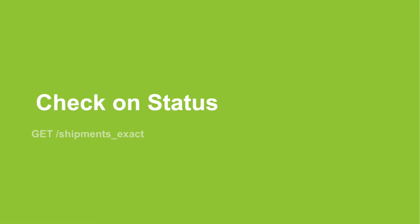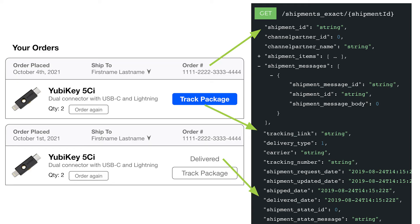You can check on the status of a shipment request. You may want to list a user's orders, and you can get all these details by calling GET on the ShipmentsExact resource. You can get the tracking link when it's in the Shipped state, and you can also display what date it was delivered.